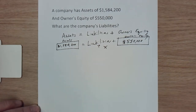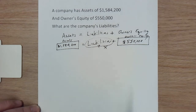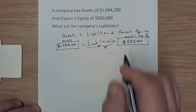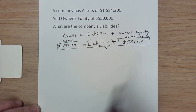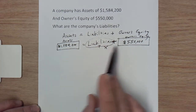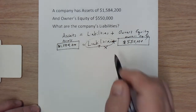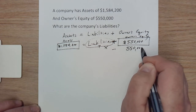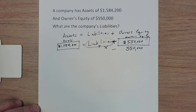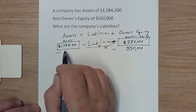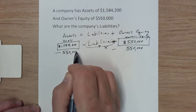All we need to do is rearrange this so that we're left with liabilities on one side and everything else on the other side. In other words, we want to isolate liabilities, just like in an algebra problem where you isolate the x — the unknown. The relationship between liabilities and owner's equity is addition; we're adding them together to equal the assets. Since we have addition and I want to move owner's equity to the other side, I need to do the opposite — subtraction. So I'm going to subtract $550,000 from this side, and just like any algebra expression, if I do something to one side I've got to do the exact same thing to the other side, otherwise the equation is out of balance.